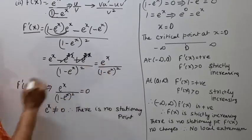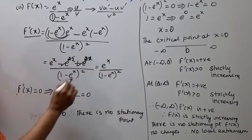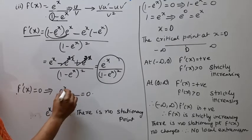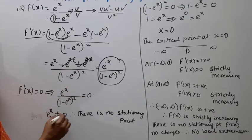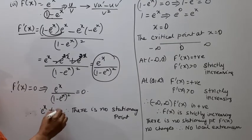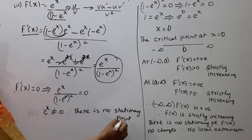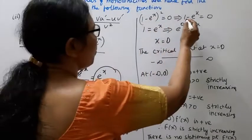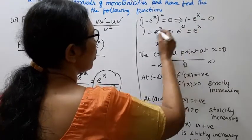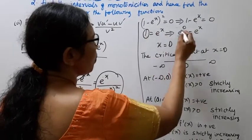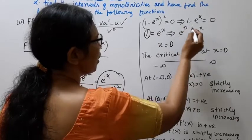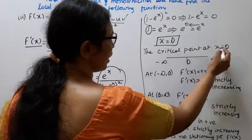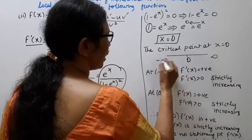We have found f'(x) = -e^x / (1 - e^x)². Now we find f'(x) = 0. Setting the numerator -e^x = 0: since e^x is always positive and never equals zero, the critical point is at x = 0.